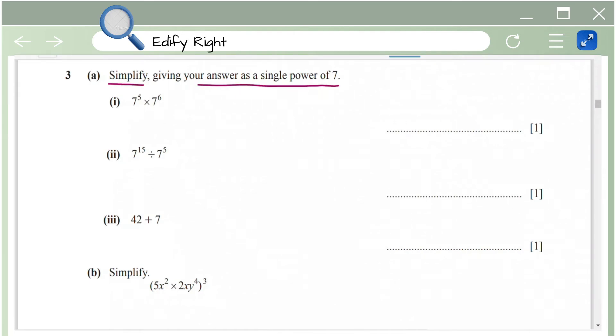Simplify giving your answer as a single power of 7. So let's start with the first bit. Here it says 7 power 5 into 7 power 6. Here the bases are same and the powers are different. So basically you're supposed to add the powers which is 7 power 5 plus 6 which is 7 power 11.